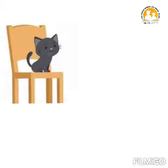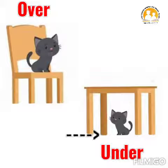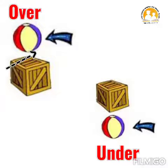The cat is sitting over the chair. The cat is sitting under the table. The ball is over the box. The ball is under the box.